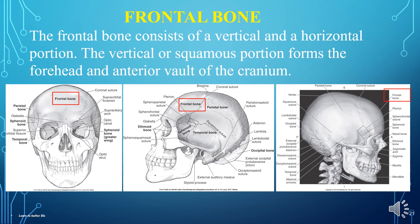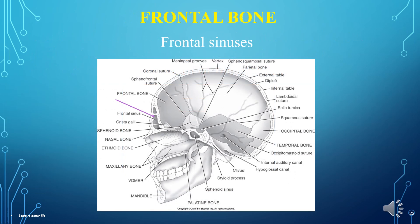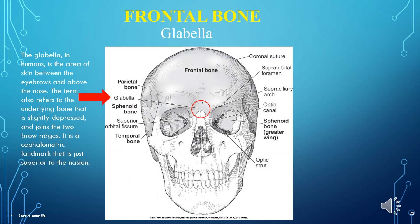Let's look at the frontal bone. The frontal bone consists of a vertical and a horizontal portion. The vertical or squamous portion forms the forehead and the anterior vault of the cranium. The sinuses in the frontal bone are called the frontal sinuses — see the purple arrow. The glabella, in humans, is the area of skin between the eyebrows and above the nose. The term also refers to the underlying bone that is slightly depressed and joins the two brow ridges.